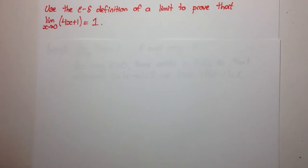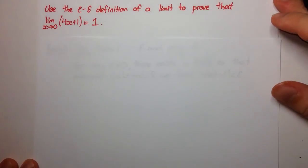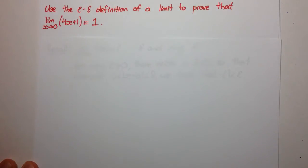So epsilon-delta definitions of limits might seem a little bit daunting to start off with because there's so many symbols and inequalities and absolute values everywhere. But let's try to break it down in this video and start off with a simple example and we'll go on to some harder ones later.